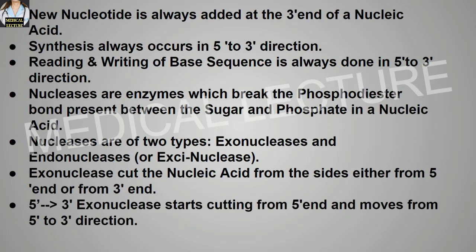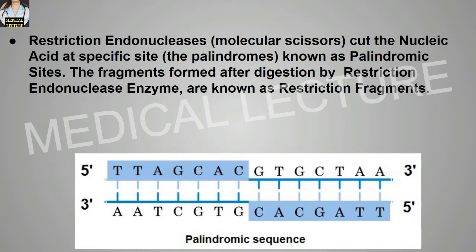5' to 3' exonuclease starts cutting from the 5' end and moves in the 5' to 3' direction. Restriction endonucleases cut the nucleic acid at specific sites known as palindromic sites. The fragments formed after digestion by restriction endonuclease enzymes are known as restriction fragments.